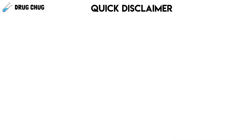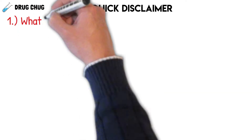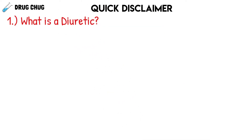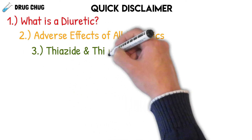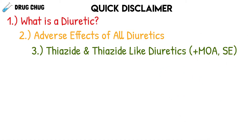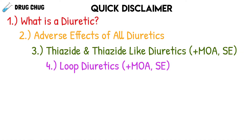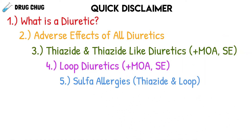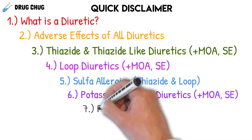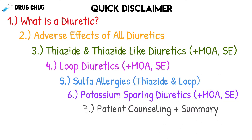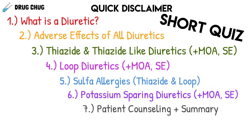I want to give a quick disclaimer: this video is packed with information, but if you go through it once you'll know everything you need to know about diuretics. We'll start with what a diuretic is, then the generic adverse effects of all diuretics, then thiazide and thiazide-like diuretics, loop diuretics, potassium-sparing diuretics, patient counseling, a summary, and a short quiz at the end.